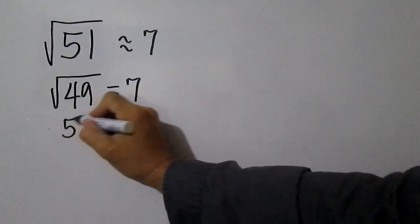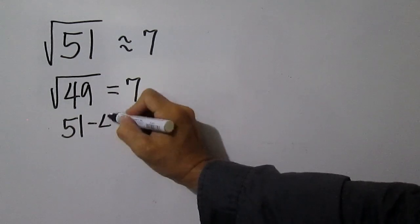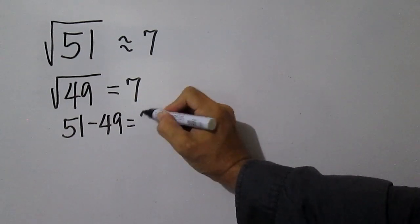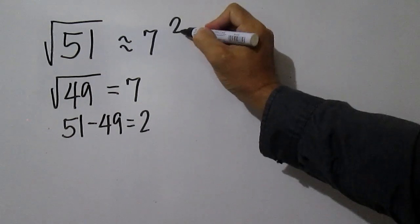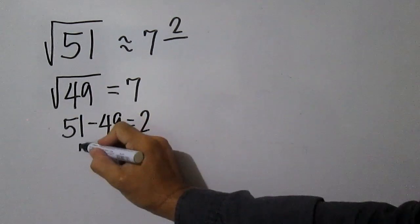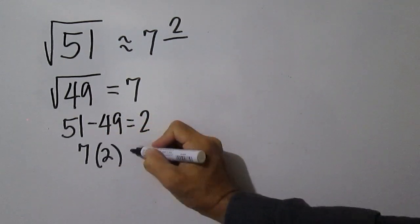Subtract 49 from 51. Then double 7. 7 times 2 is 14.